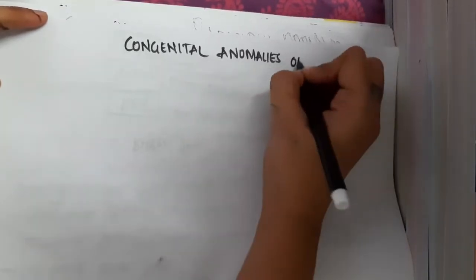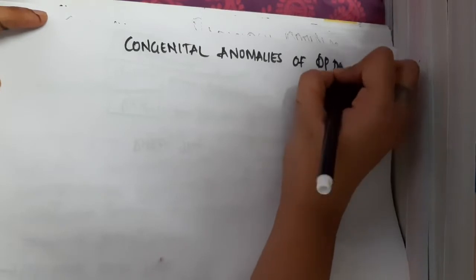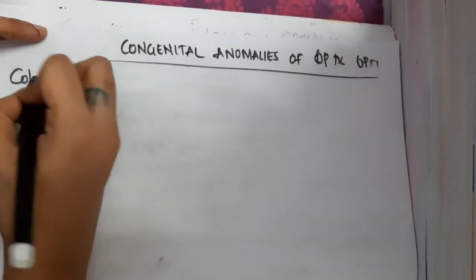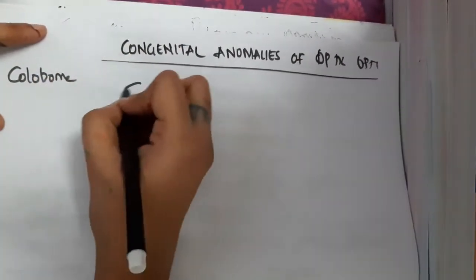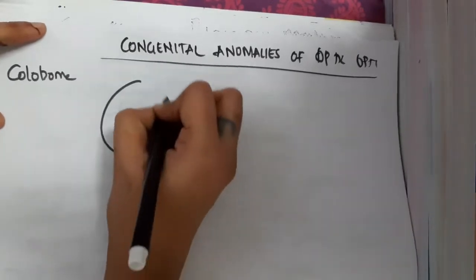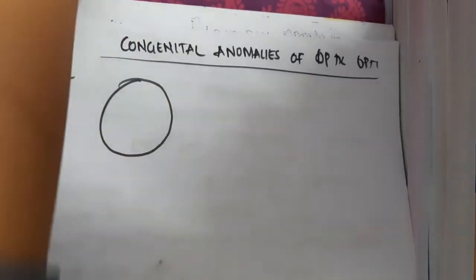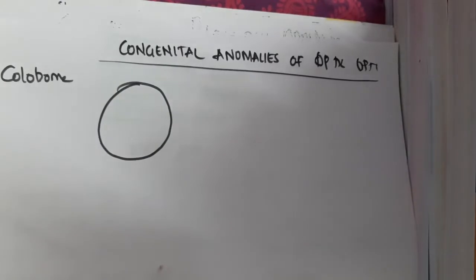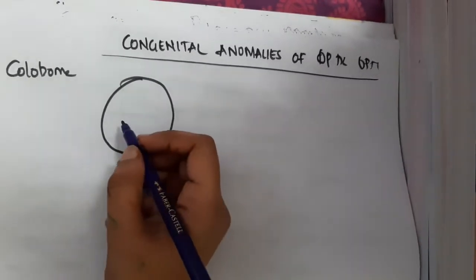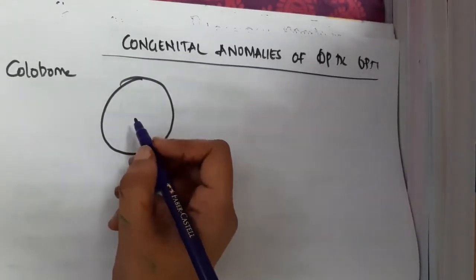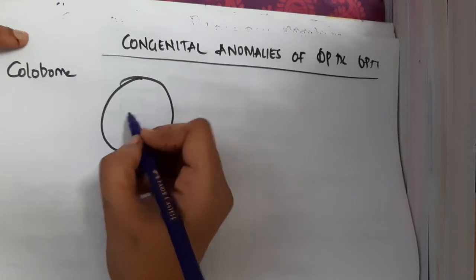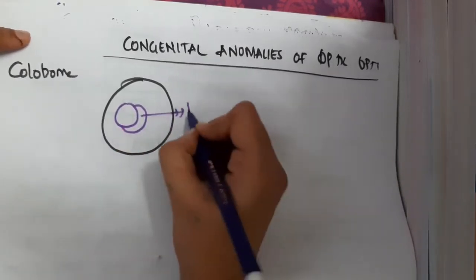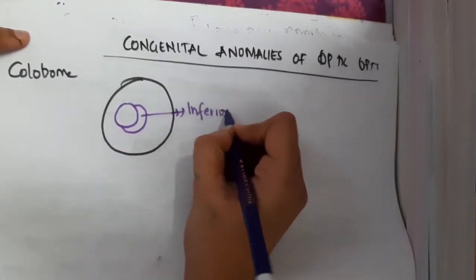If you see the congenital anomalies of the optic disc, we have many types. First, there is coloboma. Coloboma is a defect or absence of tissues, or defective closure of the embryonic disc.